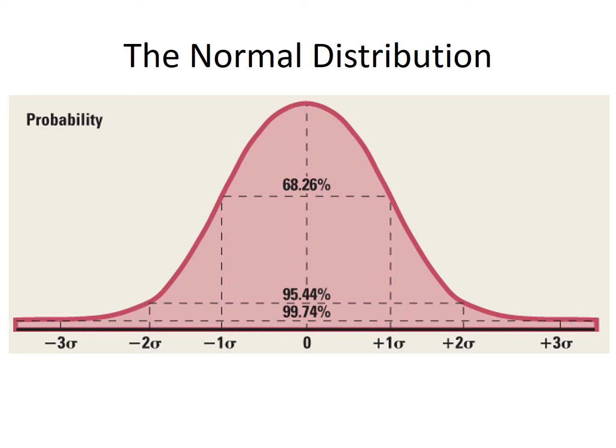And there's a 99.74% chance that it will fall between minus 3 standard deviation and plus 3 standard deviations. Now on occasion, you will see approximations used for these. And the approximations we typically use are 68, 95, and 99.